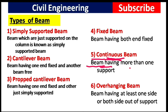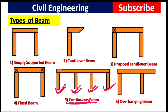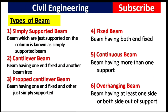The next type is the continuous beam. A beam having more than one support is known as a continuous beam. As you can see in this picture, this beam has several supports, and a beam with several supports is known as a continuous beam.